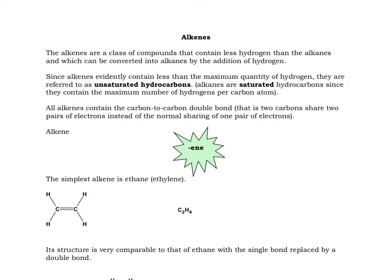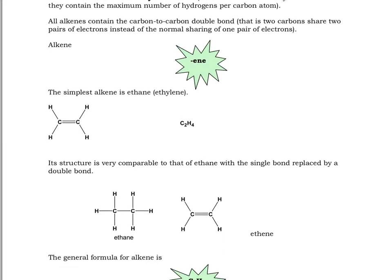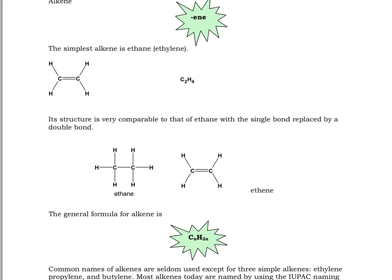The only thing that's going to change is the ending. To show that there's double bonds, instead of being -ane at the end, it'll be -ene. And to show that there's triple bonds, instead of being -ane, it'll be -yne. Other than that, it's basically the exact same naming rules.